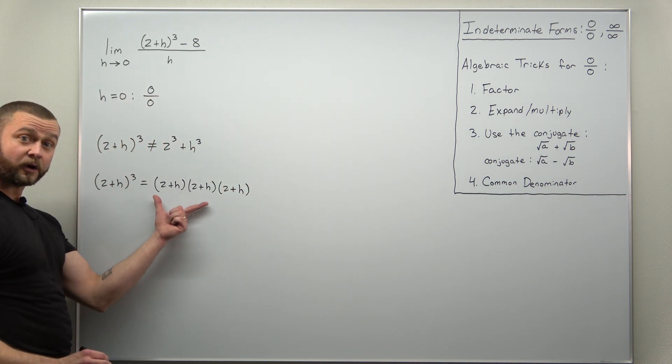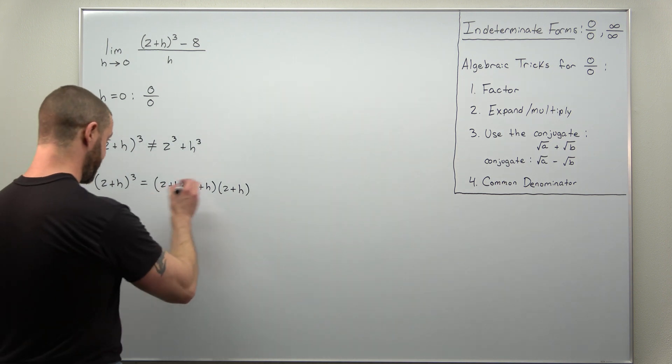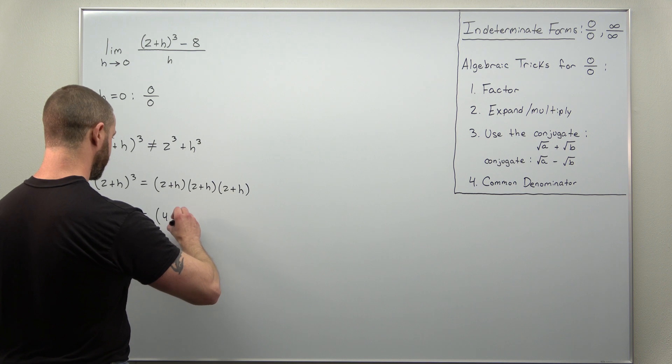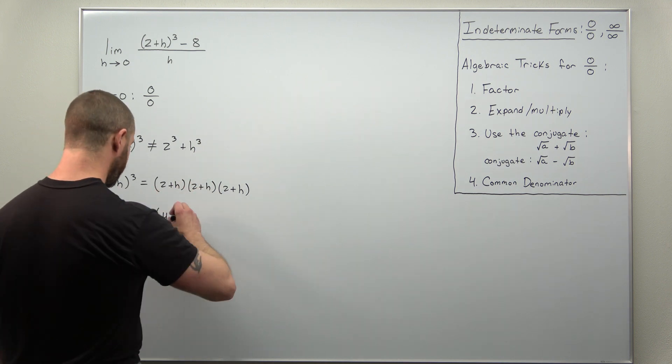And you can FOIL or expand, multiply the first two pairs. Looks like that's going to give you 4 plus 2h plus 2h, so 4h,